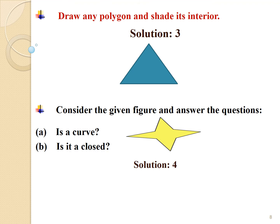Question number 4: Consider the given figure and answer the questions. In order to answer the given questions, you have to observe the given figure. Answer A: By observing the figure, it is clear that the given figure is a curve. So we write: yes, it is a curve. Answer B: Yes, the given figure is a closed curve.